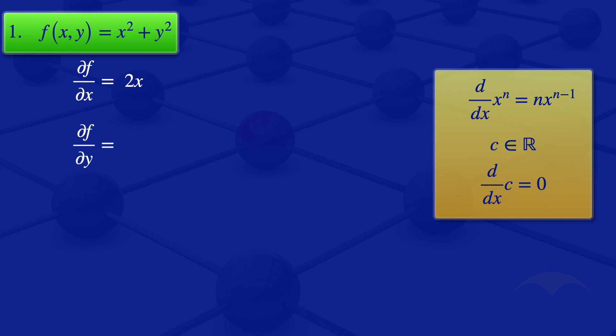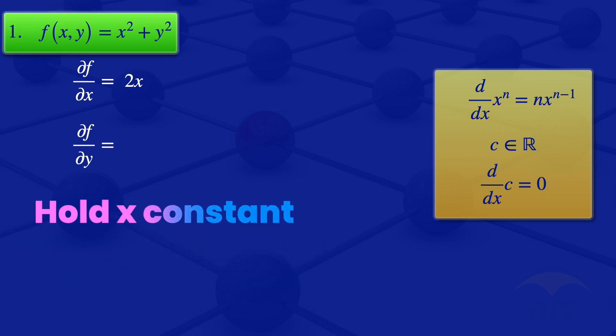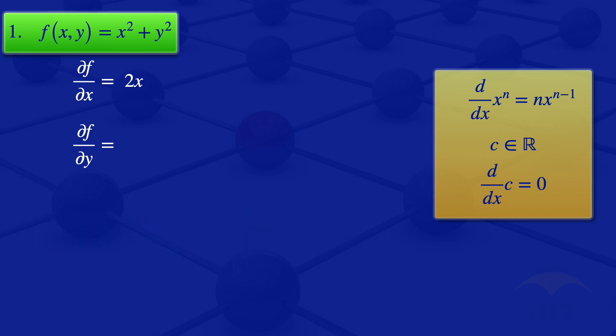For the partial derivative of f with respect to y, we are now holding x constant. The x² term, being constant, differentiates to zero. Then differentiating y² with respect to y, using the same power rule, we get 2y. So the partial derivative of f with respect to y is 2y.